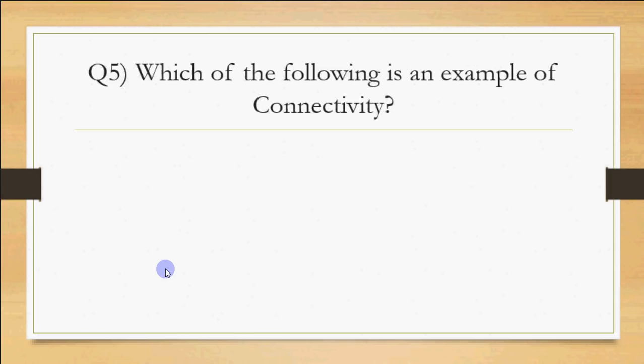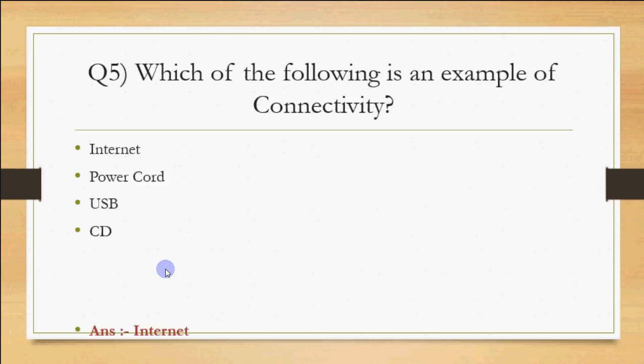Fifth question: which of the following is an example of connectivity? When we talk about connectivity in computers, the options are internet, power cord, USB, and CD. Obviously, the internet is the thing we are talking about here — it is an example of connectivity.